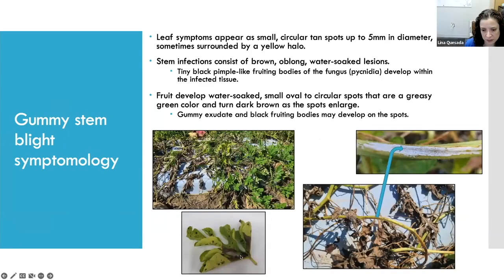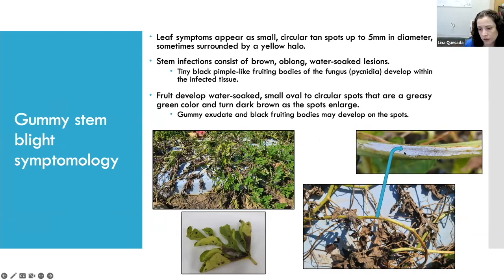Gummy stem blight symptoms are a little easier to distinguish from other watermelon diseases because the lesions tend to be more at the leaf edges, look very dark and necrotic. For someone trained, if you look at those lesions with a hand lens you will see the fungal structures. You can also have stem lesions, but those sometimes also appear with anthracnose.